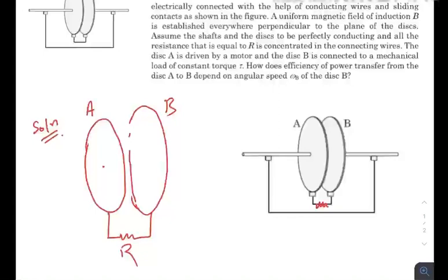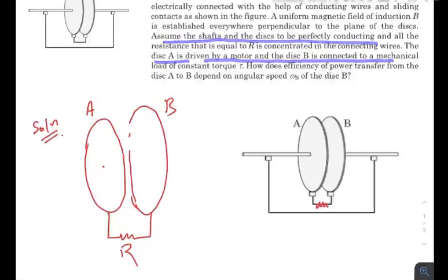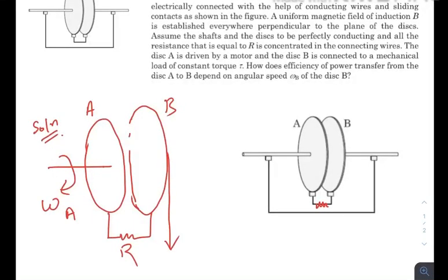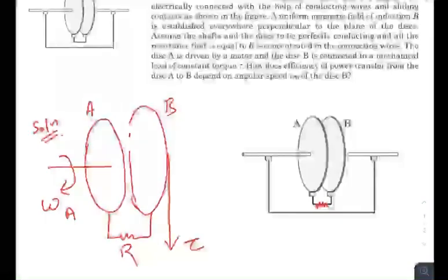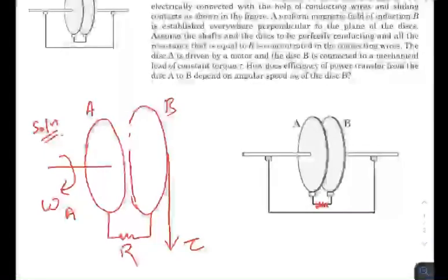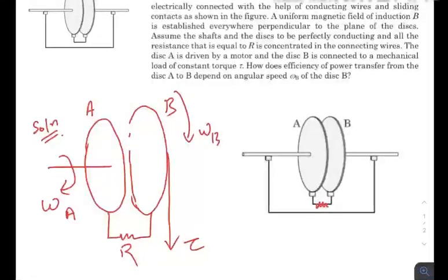Disk A is driven by a motor producing a constant angular velocity ω_a, and disk B is connected to a mechanical load of constant torque τ. There is a constant torque τ always acting on disk B. We are considering that disk B is rotating with a constant angular velocity ω_b, so some power must be transferred from disk A to disk B to maintain this.